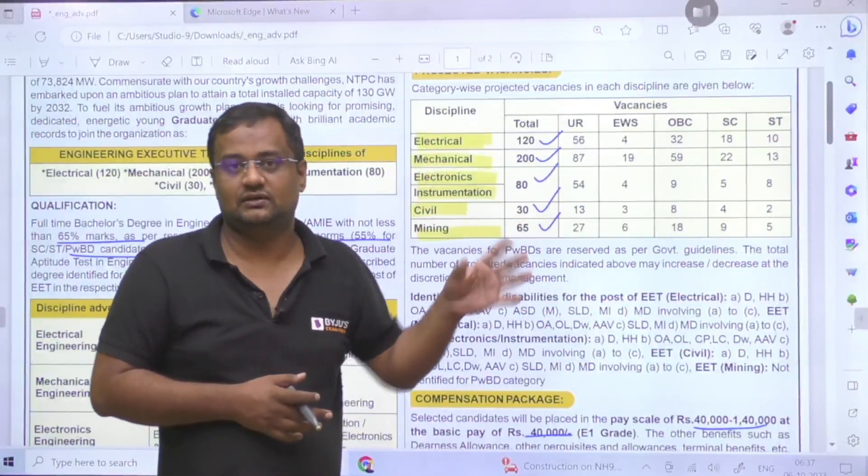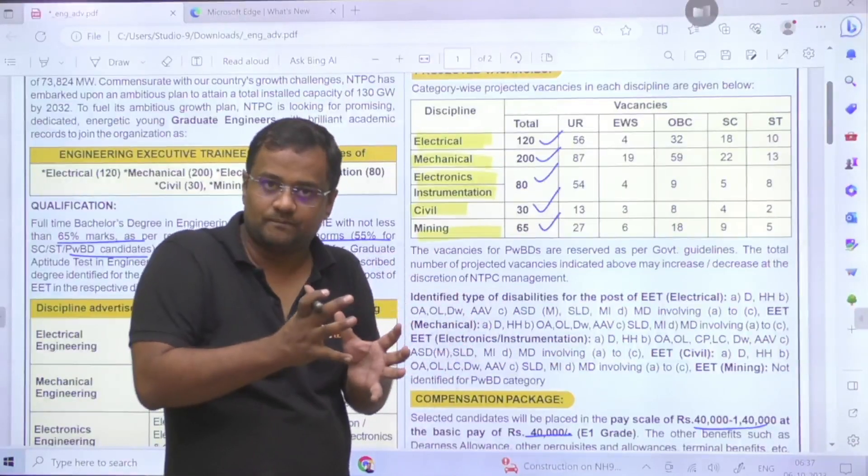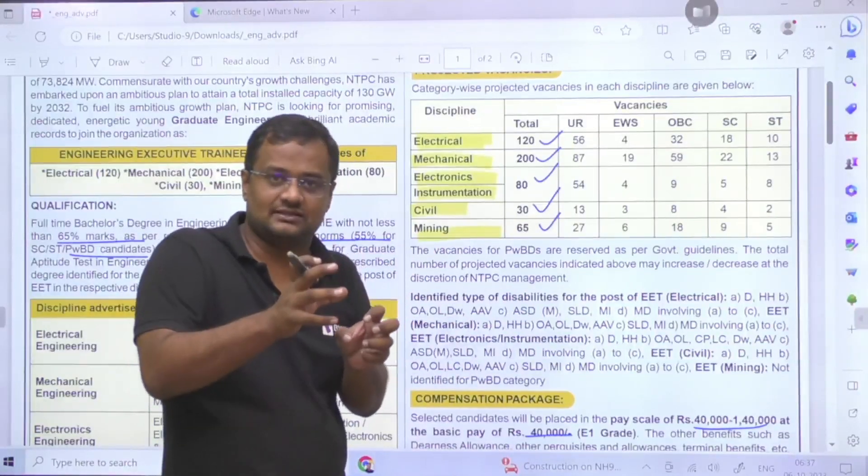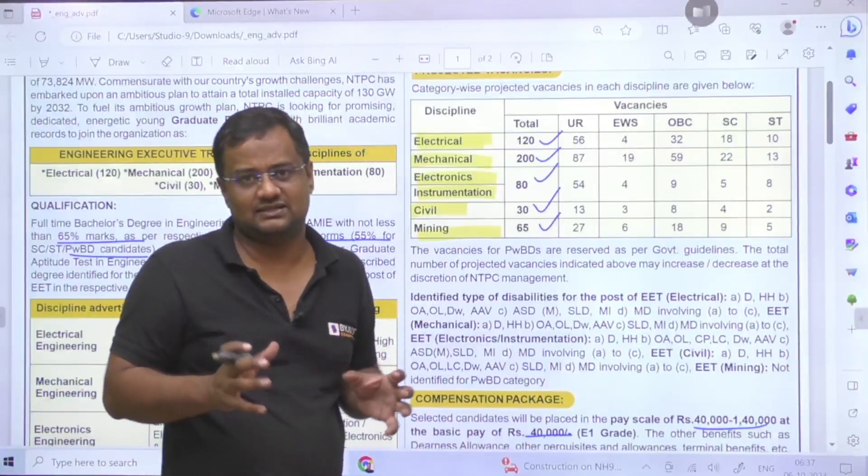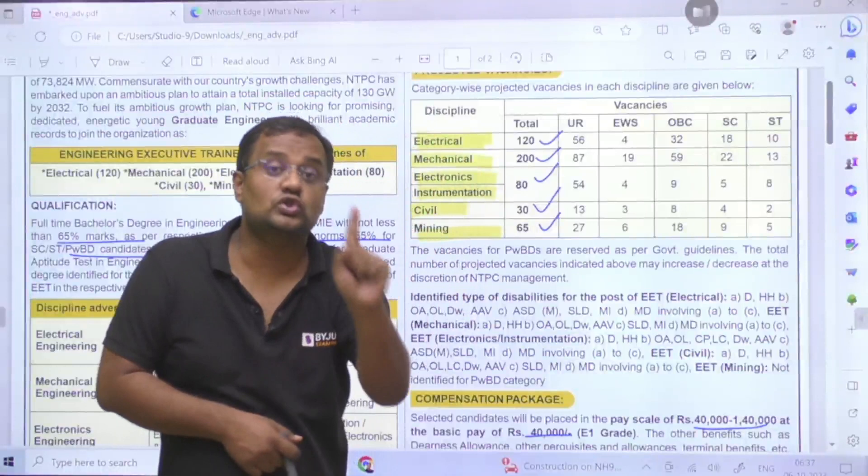For CIL, huge number of vacancies have come for Civil especially, couple of weeks before. That means huge competition will be reduced. Now that means bright chances. Even if some syllabus is left, guys, these kind of vacancies especially for GATE 2024 will also impact GATE 2024 students by reducing their competition to some extent.